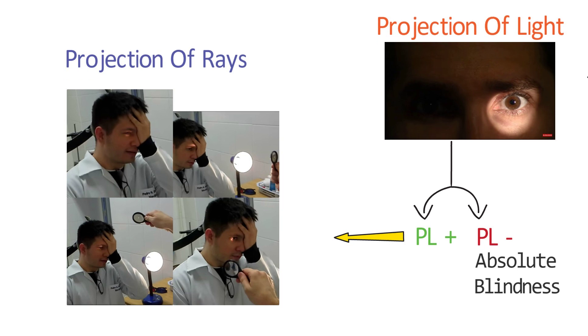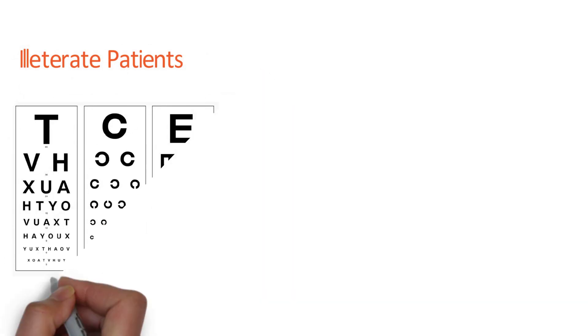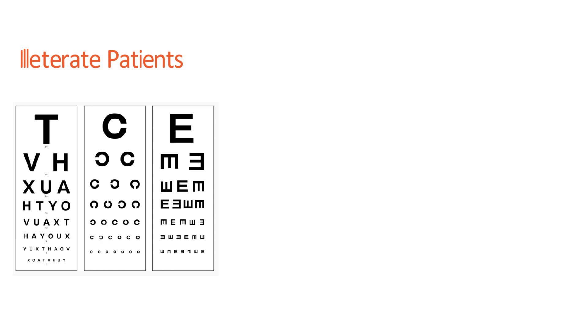Now, the basis of Snellen's chart is form sense and illiterate people cannot read it. So, for illiterate persons, we use E chart or C chart. The patient has to tell the direction in which the mouth of the letter is opening.